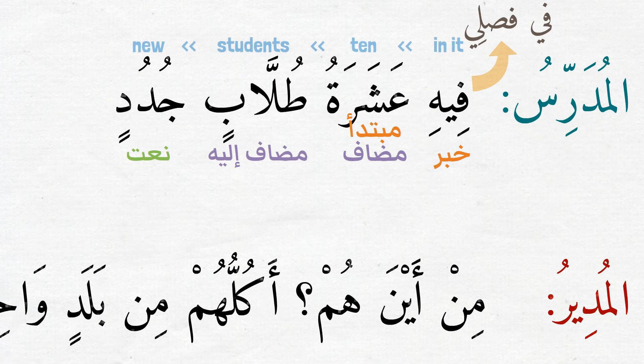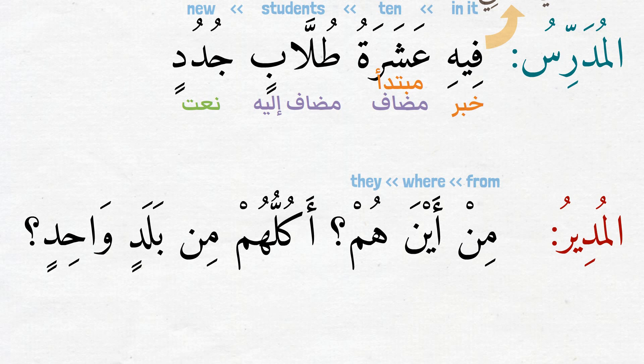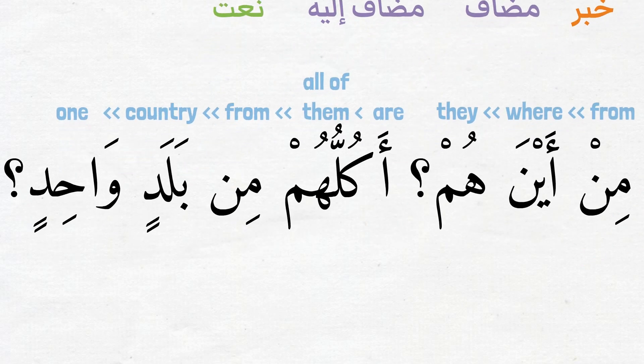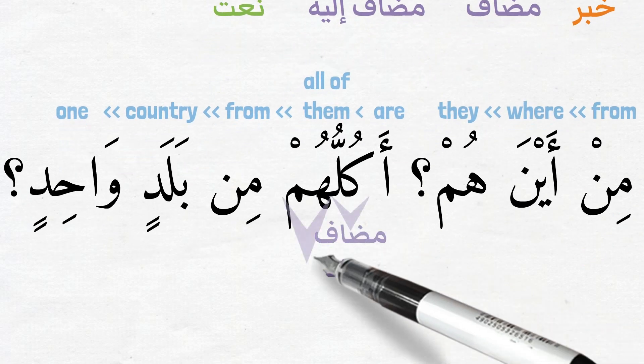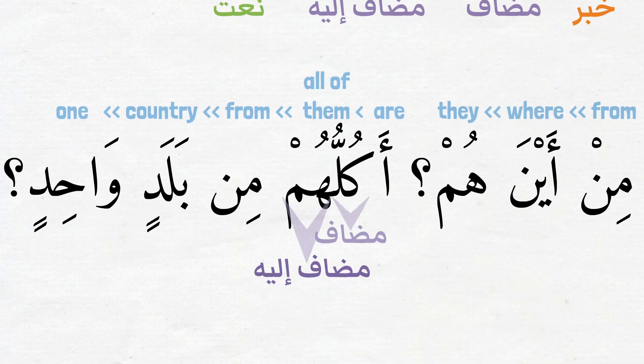Next, المدير asks: من أين هم? — Where are they from? أكلهم من بلد واحد? — Are all of them from one country? Here, كلهم is a مضاف and مضاف إليه combination, composed of اسم كل and ضمير هم. كلهم means 'all of them.'